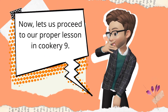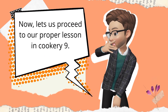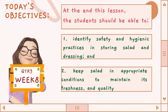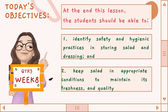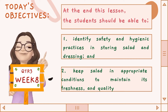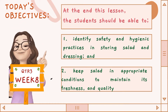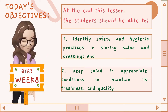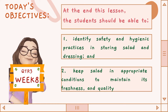Now let us proceed to our proper lesson in Cookery 9. Today's objectives: At the end of this lesson, the students should be able to: 1. Identify safety and hygienic practices in storing salad and dressing, and 2. Keep salad in appropriate conditions to maintain its freshness and quality.